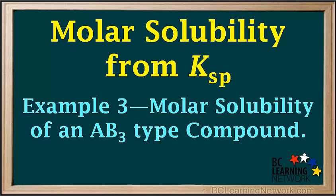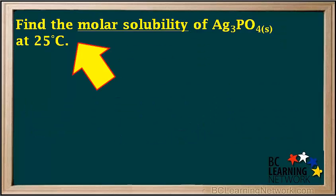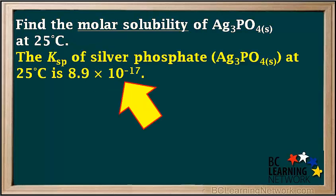In this video we'll do an example where we'll calculate the molar solubility of an AB3 type compound given its Ksp. We're asked to find the molar solubility of silver phosphate, Ag3PO4, at 25 degrees Celsius. We are given that the Ksp value for Ag3PO4 at 25 degrees is 8.9 times 10 to the negative 17th.